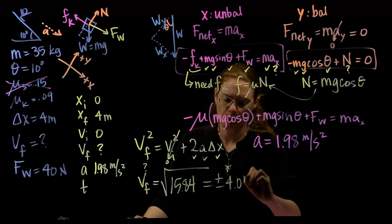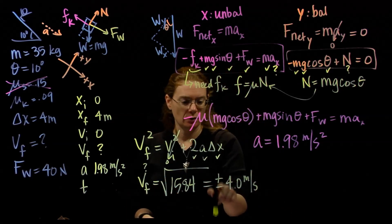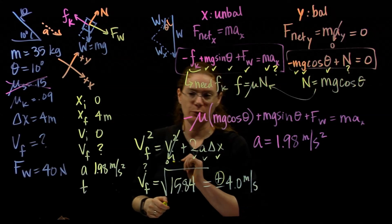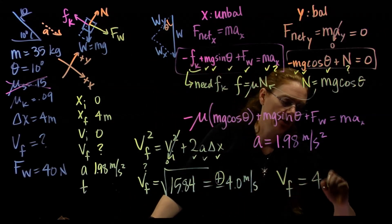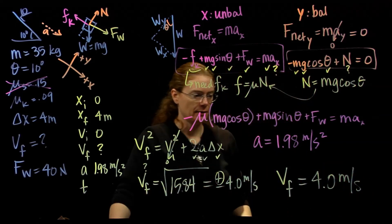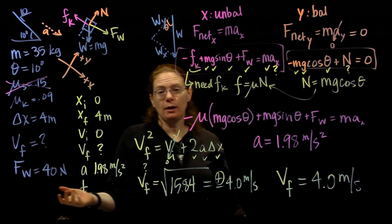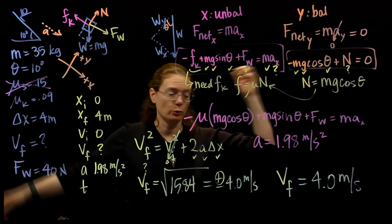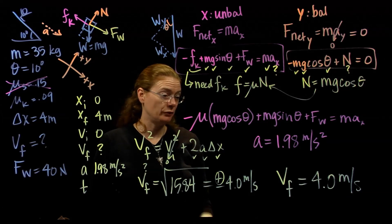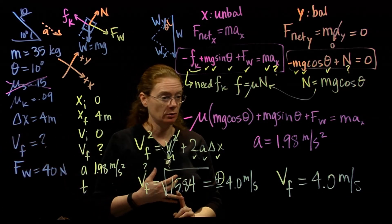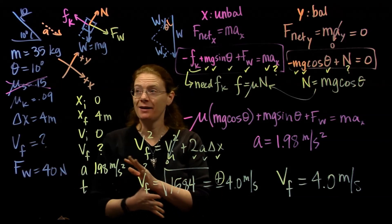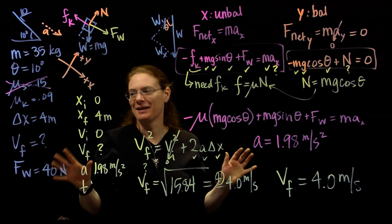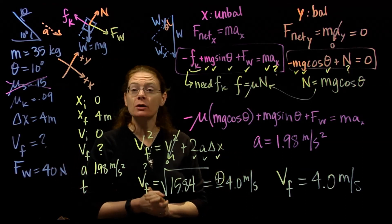v final squared equals zero plus 2 times 1.98 times 4, giving square root of 15.84, which is plus or minus 4.0 meters per second. Since I defined the positive x direction as the direction the kid is moving, I choose the positive root. My final answer is the child is moving at 4 meters per second when they reach the bottom of the slide. Is that reasonable? 4 meters per second is about 8 or 9 miles an hour — that seems quite reasonable for 4 meters. We've answered the question using both forces and kinematics, with angles, friction, and a pushing force — a good problem to pull it all together.